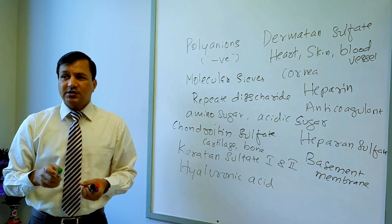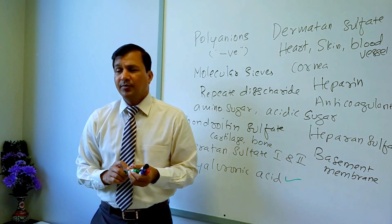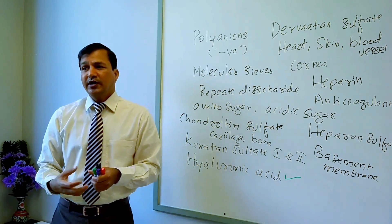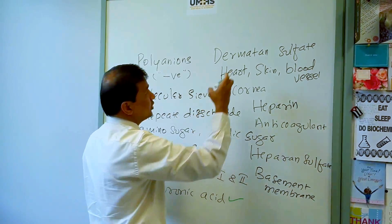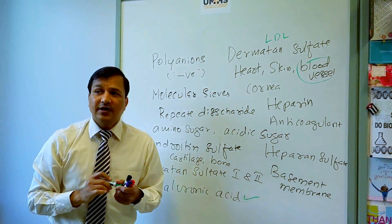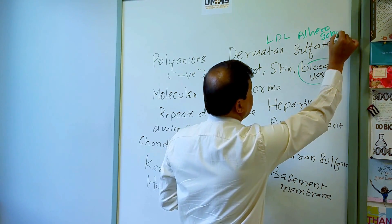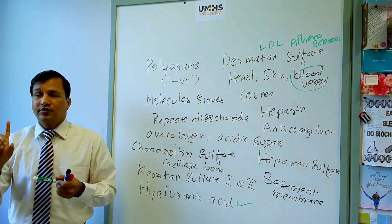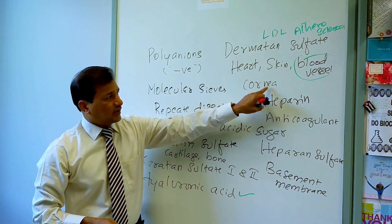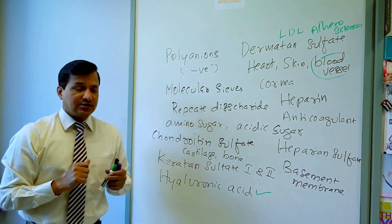Additional functions: hyaluronic acid helps in cell migration during embryogenesis and morphogenesis, and also in wound healing — sufficient hyaluronic acid is needed for morphogenesis and wound healing. Dermatan sulfate in blood vessels holds on to LDL molecules; if there is excess dermatan sulfate, it binds LDL and can participate in atherosclerosis. Dermatan sulfate is also responsible for corneal transparency.